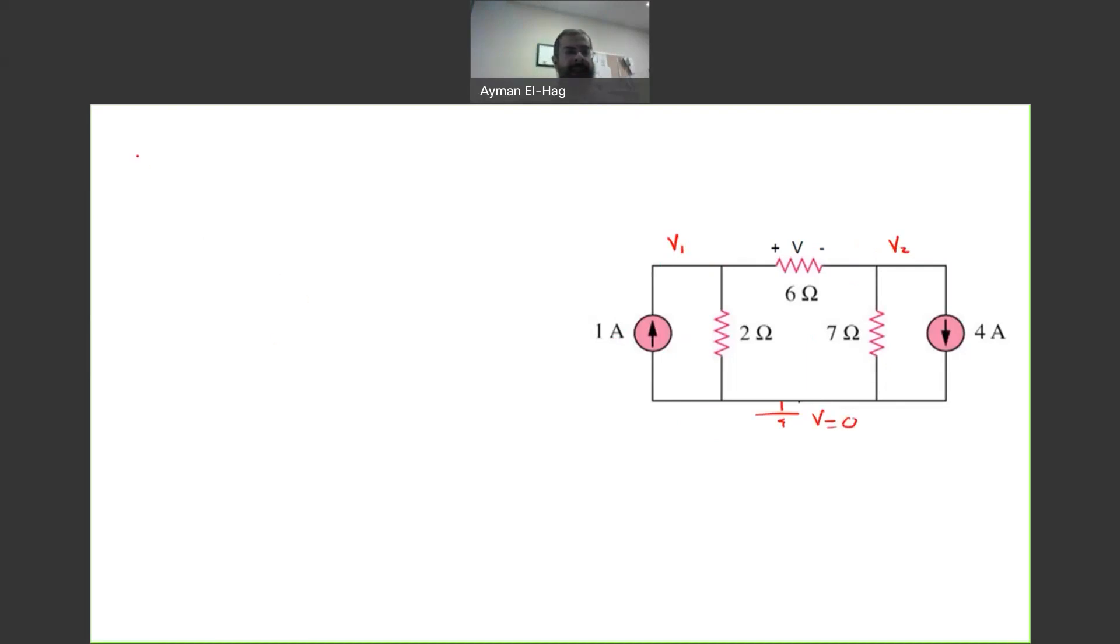So, I will apply KCL at V1. Now, how to assign the current directions? When we have a current source, we use it as it is. Enter or leave the node. We don't touch. The rest, it's up to you. As far as you apply the simple KCL rule, current enter the node, equal current leaves the node. It doesn't really matter.